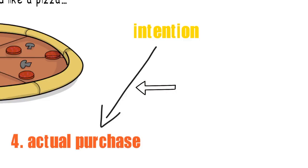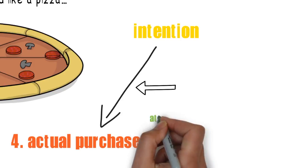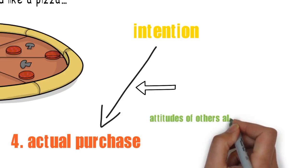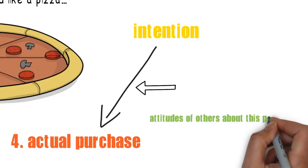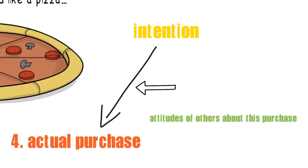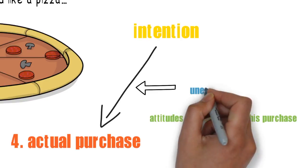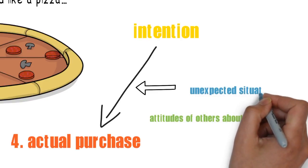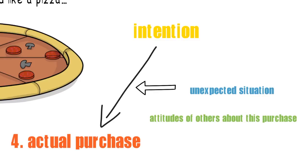The first factor is the attitudes of others about this decision, that means for example what important others would think about your decision. And the second is some unexpected situation that might arise, for example a decision to postpone the purchase due to another need that came up which is more important or urgent.